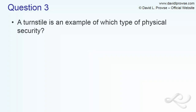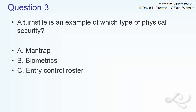Question 3: A turnstile is an example of which type of physical security? Short question this time. A turnstile could be one of those at the subway, or one of the taller ones with an entire locking gate. The possible answers are: A, man trap — that looks good; B, biometrics; C, entry control roster; and D, cipher lock.